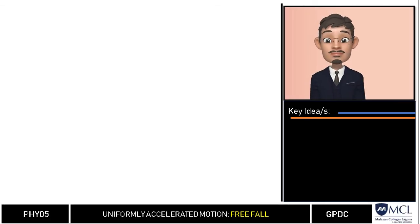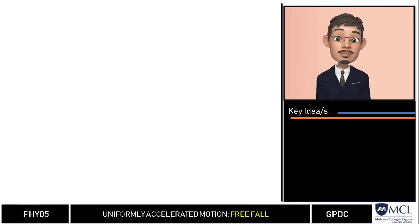In the last video we talked about uniformly accelerated motion. The most common example of uniformly accelerated motion is an object falling towards the earth's surface. In this video we describe the motion of free falling bodies and we will identify whether all objects are falling at the same rate.